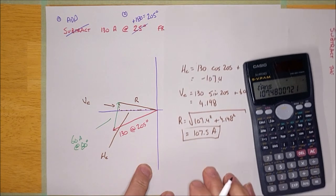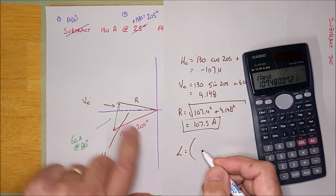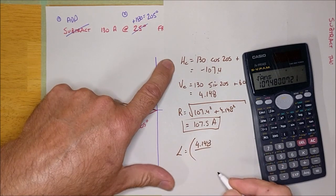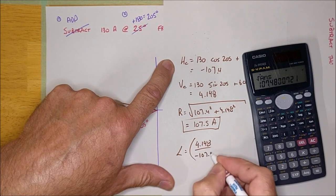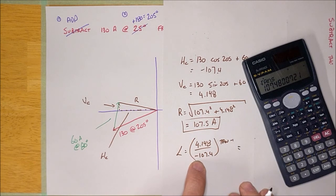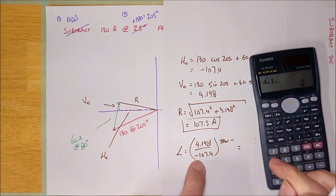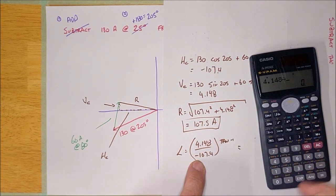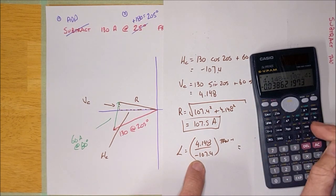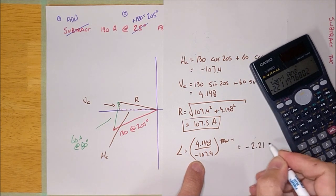Now there's one more thing we can calculate: the phase angle. It's the inverse tangent of the opposite side (the vertical component, 4.148) over the adjacent side (minus 107.4). You need to keep the negative sign in there. So: arctan(4.148 / −107.4) equals, and the calculator gives minus 2.21 degrees.